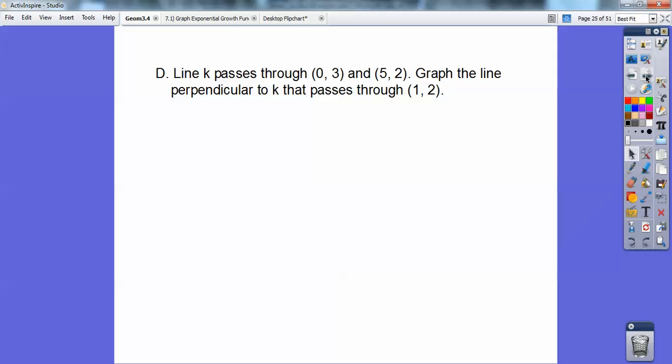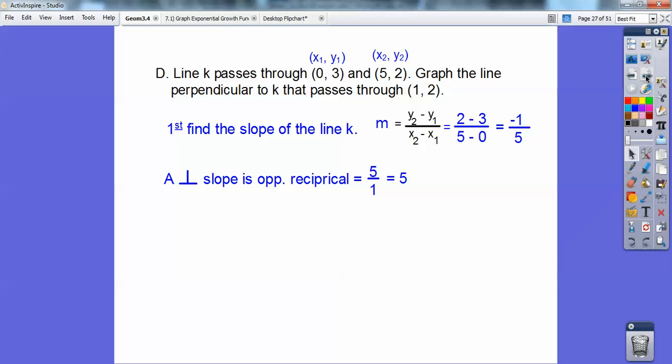Line K passes through (0, 3) and (5, 2). Graph the line that's perpendicular to that line K that passes through (1, 2). First we've got to find the slope of line K. So remember y₂, y₁ over x₂, x₁. So I'm going to go this y minus this y over this x minus this x. And I get negative 1 fifth.